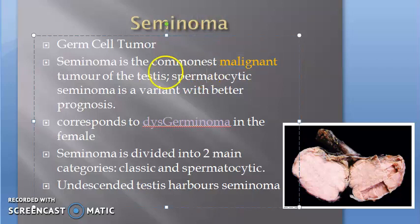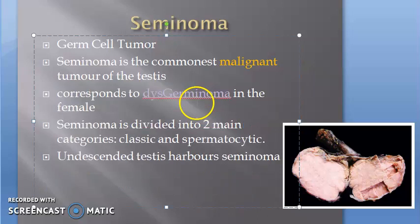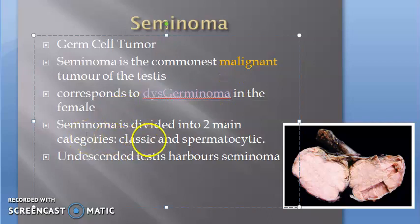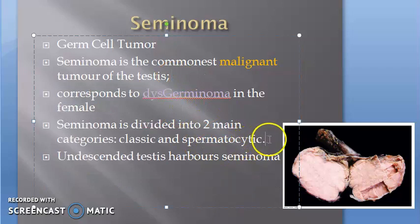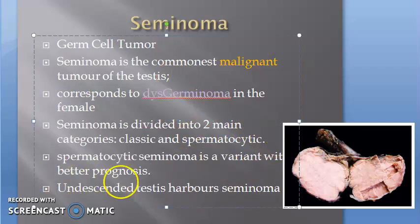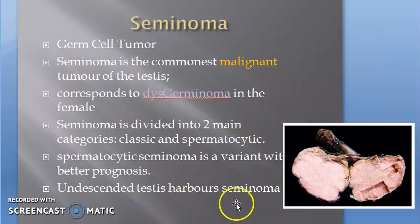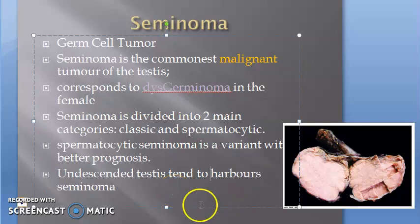There are two types: classic and spermatocytic. The spermatocytic variation has a better prognosis. In females, it corresponds to dysgerminoma. Undescended testis tends to harbor seminomas — not always, but they tend to.